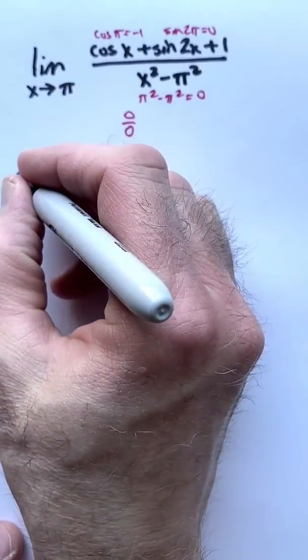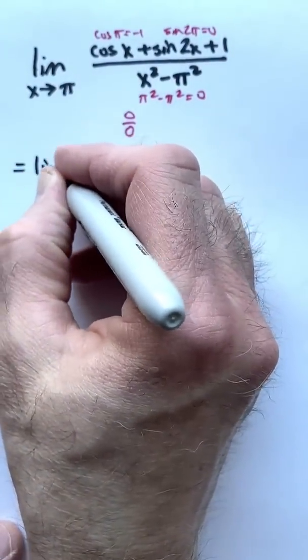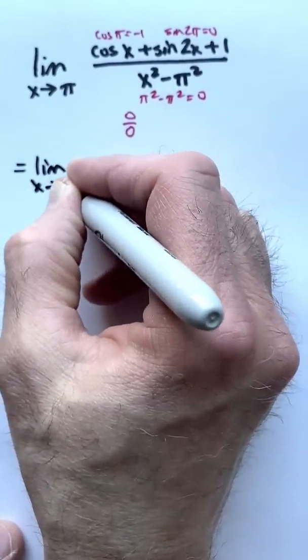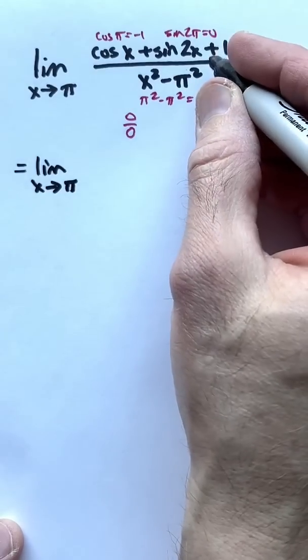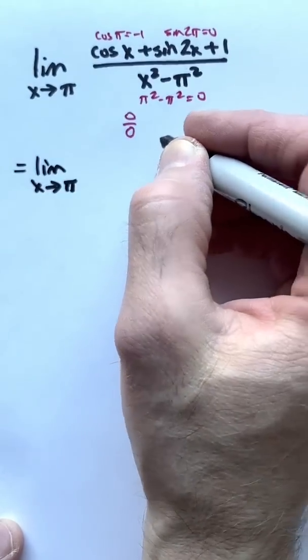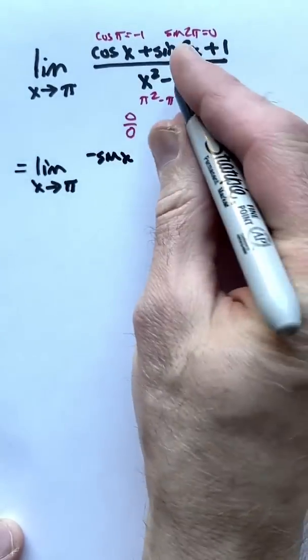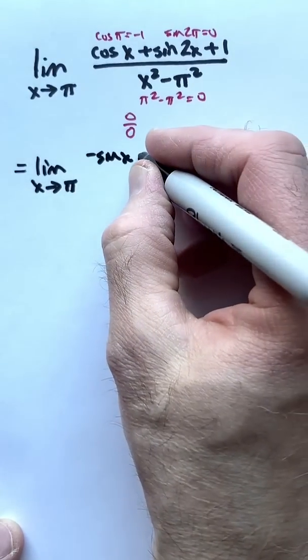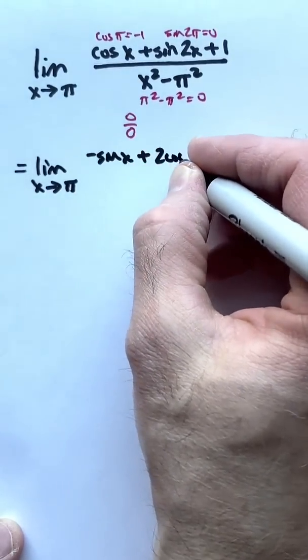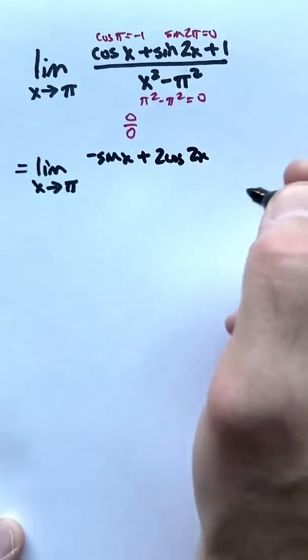We can therefore use L'Hopital's rule to write that it equals the limit as x goes to pi of the derivative of the top divided by the derivative of the bottom, assuming the limit ultimately exists. The derivative of cosine is negative sine x. The derivative of sine of 2x by the chain rule is 2 cos 2x. The derivative of 1 is 0.